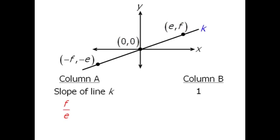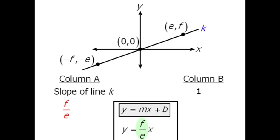Now at this point, I'd like to write the equation for line k in slope y-intercept form, where m equals the slope and b equals the y-intercept. Now we already know that the slope is equal to f over e. We can see by the diagram that the y-intercept is equal to zero.